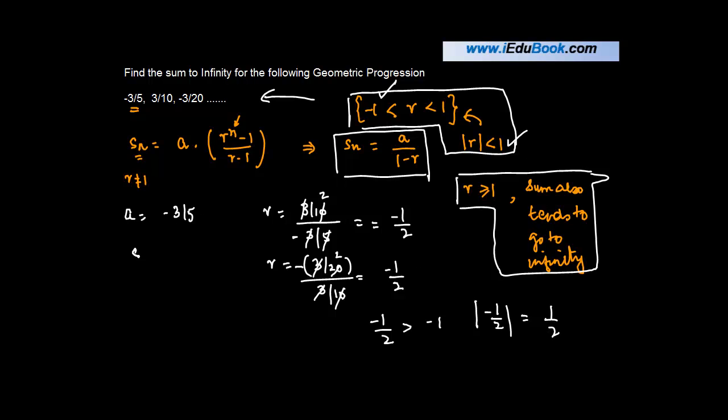we can say that the sum of this infinite GP can be written as a upon 1 minus r. The value of a we know is minus 3 by 5 divided by 1 minus r. How much is the value of r? Minus 1 upon 2.